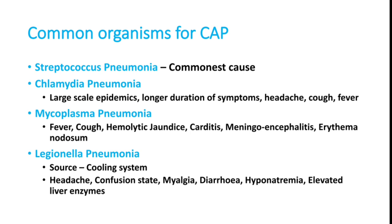Legionella pneumonia mainly originates from AC systems and cooling systems. Features include headache, altered behavior — which is very important — myalgia, diarrhea, hyponatremia, and elevated liver enzymes. To summarize: typical symptoms point to Streptococcus pneumoniae, while atypical symptoms suggest Chlamydia, Mycoplasma, or Legionella.